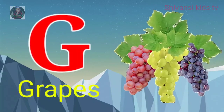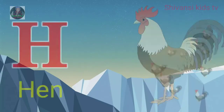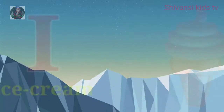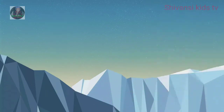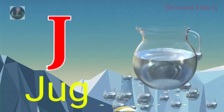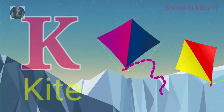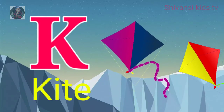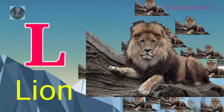H for hand, I for ice cream, J for jug, K for kite, L for lion.